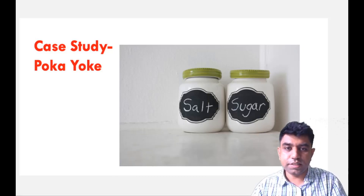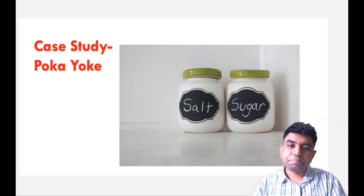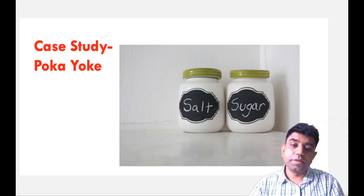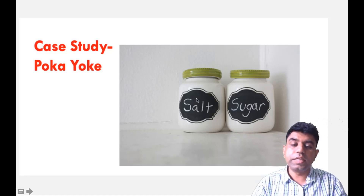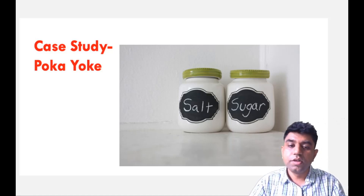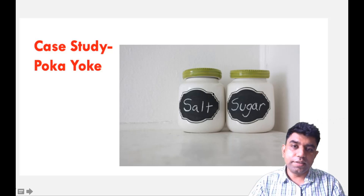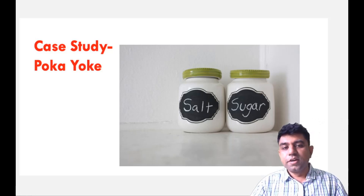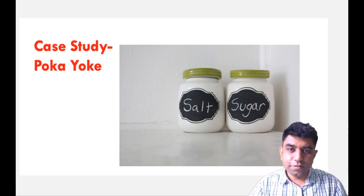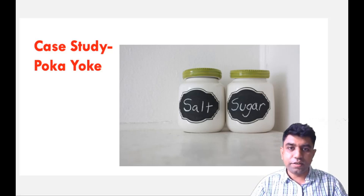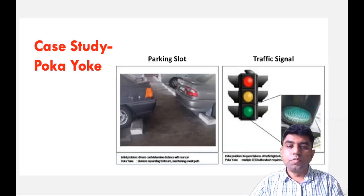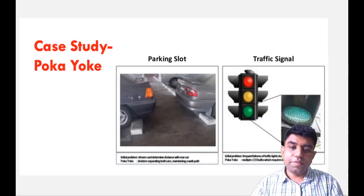Another case study we all face: if salt and sugar bottles are kept in glass bottles, the appearance will be the same. If you don't write anything on the bottle, obviously there are a lot of chances to make a mistake. So simply write down what is inside the bottle. Even at a restaurant, a very common unintentional mistake is finding out which container has pepper and which has salt — we always get confused between those two things. That is nothing but Poka Yoke.